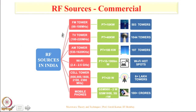Let us look at the different RF sources in the commercial domain. These are RF sources in India, but it would be similar in other countries also. FM towers are there — typical frequency range is between 88 to 108 MHz and they may be transmitting about 10 kilowatts of power. There are some FM towers inside colleges or community services that may be allowed to transmit only 50 watts.